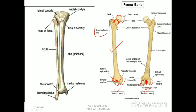This is our tibia bone. The fibula is always present on the lateral side and tibia on the medial side, giving us the medial condyle and lateral condyle of the tibia. This is the tibial tuberosity, also known as the shin bone. Here we have the medial malleolus and lateral malleolus, and distally we have the distal tibiofibular joint, which we will discuss in the ankle joint chapter.